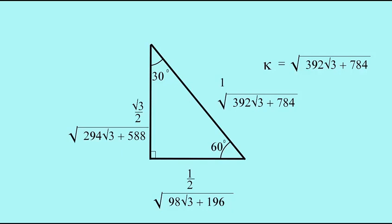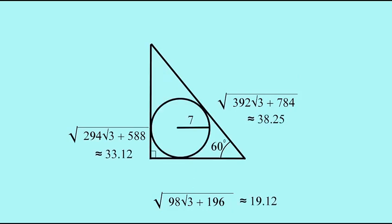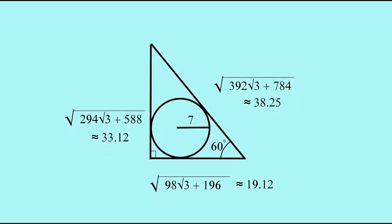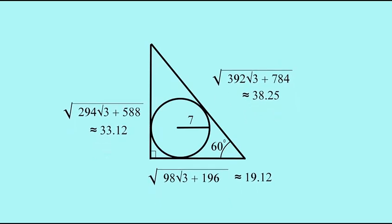We can use a calculator to give approximate values for each side. The short side is 19.12, the opposite side is 33.12, and the hypotenuse is 38.25. And that's the answer. Thanks for watching.